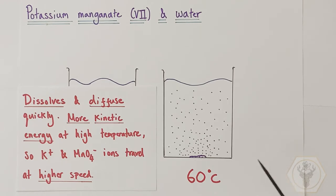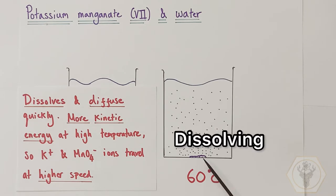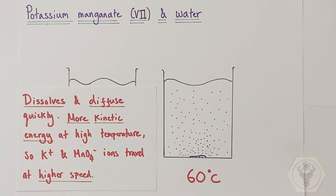This is because at higher temperature, there is more thermal energy, but therefore also more kinetic energy, more energy of motion. That's aiding in the dissolving of the crystal, but it's also speeding up the motion of the potassium and manganate ions, which produce that purple color, which are traveling at high speed throughout the water, producing this purple solution much more rapidly.